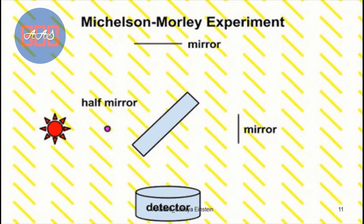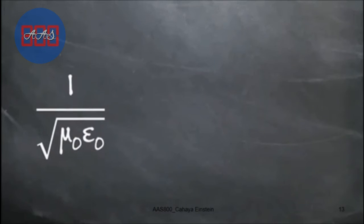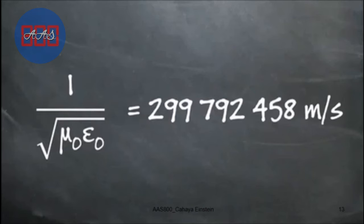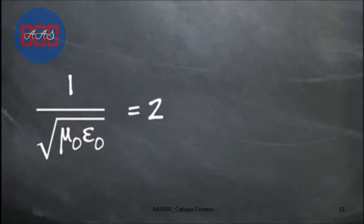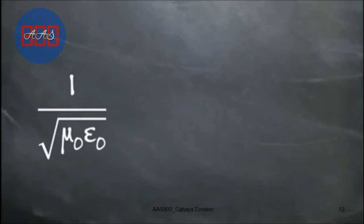Regarding this result, Einstein then made a postulate. A famous postulate, related to our discussion. Einstein said that the speed of light in a vacuum is the same for all observers. That is, around 299,792 km per second. That is the speed of light. Constant for all observers. This then gives birth to what is called the special theory of relativity.